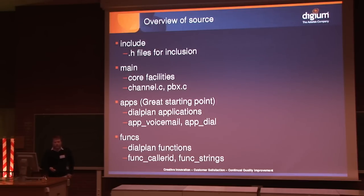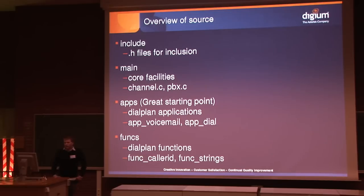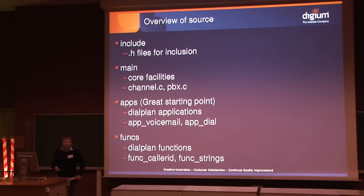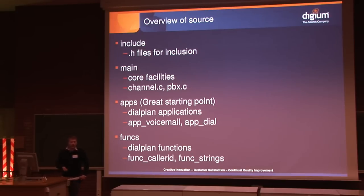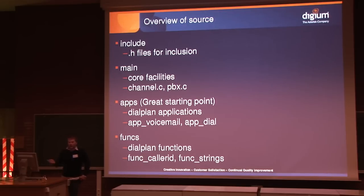The include directory contains the .h header files that all the files in Asterisk include. The main directory has APIs defined by the core — things like the Asterisk channel structure, which is one of the most basic key structures in Asterisk and has all of its APIs defined in the main directory, as well as the PBX core and other APIs used all over the source.